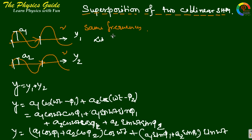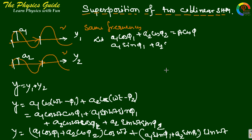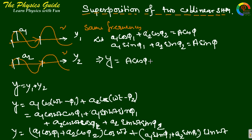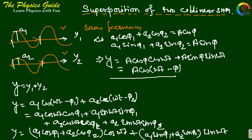Let a1 cos φ1 + a2 cos φ2 = A cos φ, and a1 sin φ1 + a2 sin φ2 = A sin φ, where A and φ are new constants. The equation then converts to y = A cos φ cos(ωt) + A sin φ sin(ωt), which simplifies to y = A cos(ωt − φ).